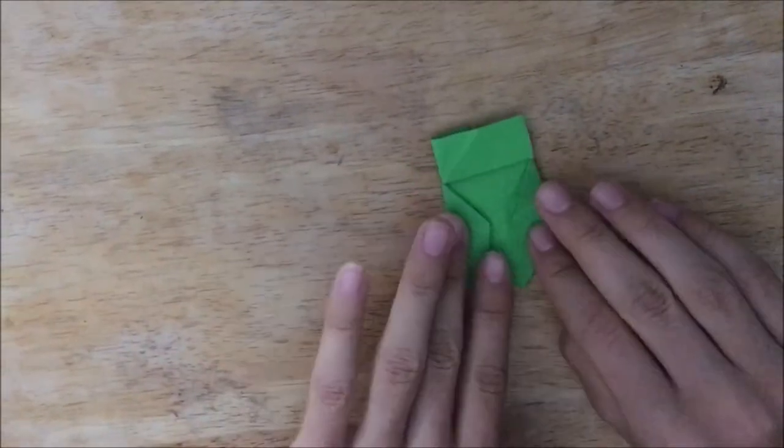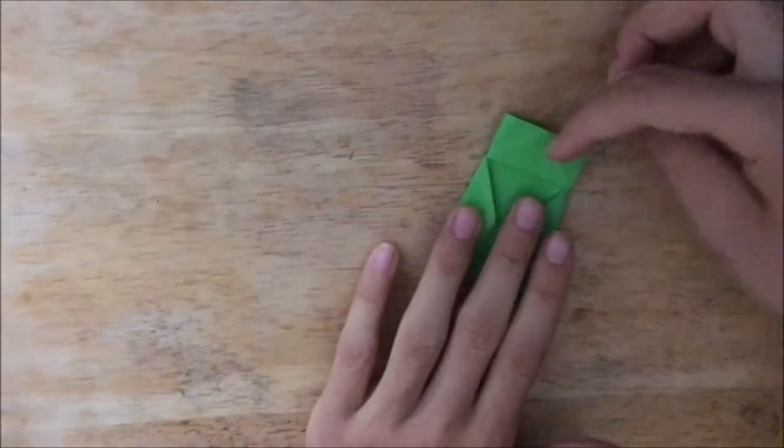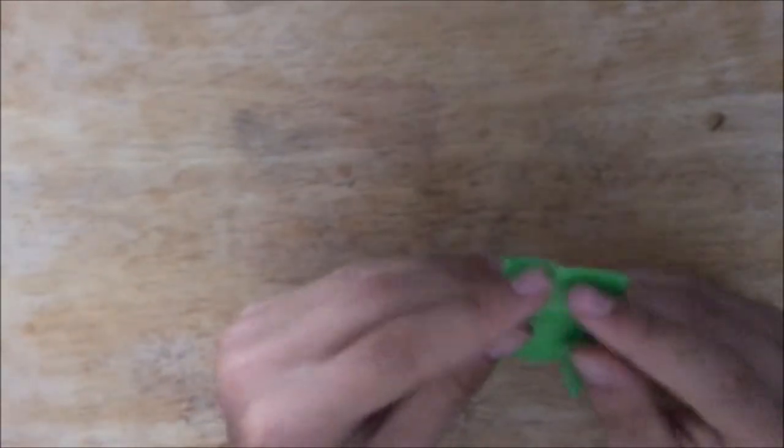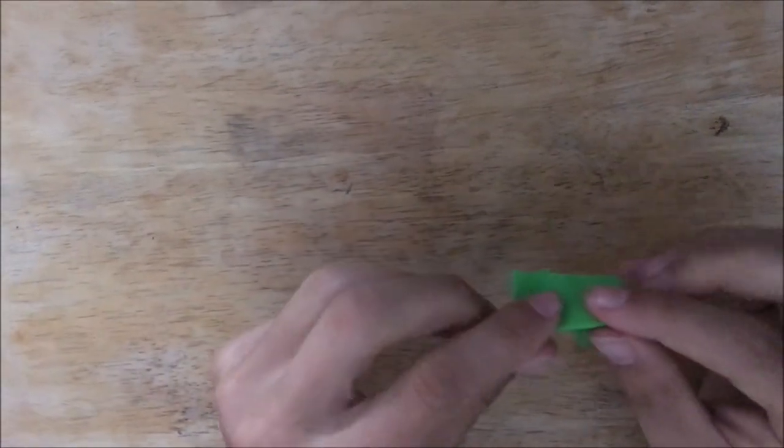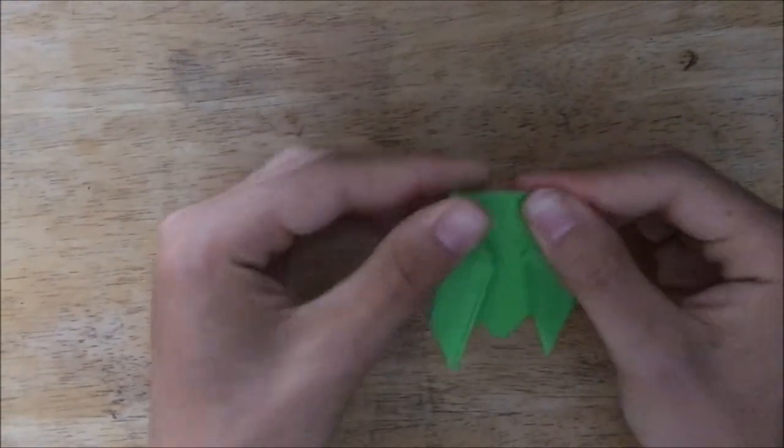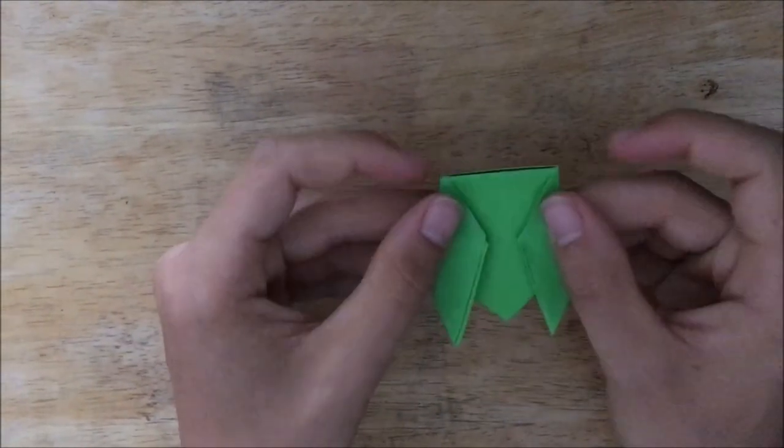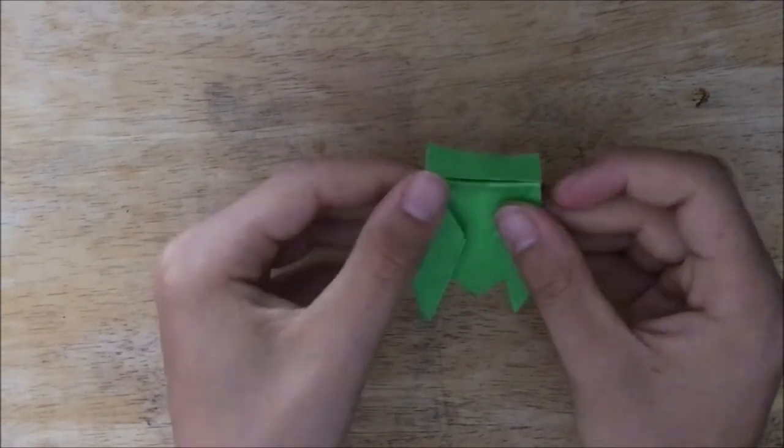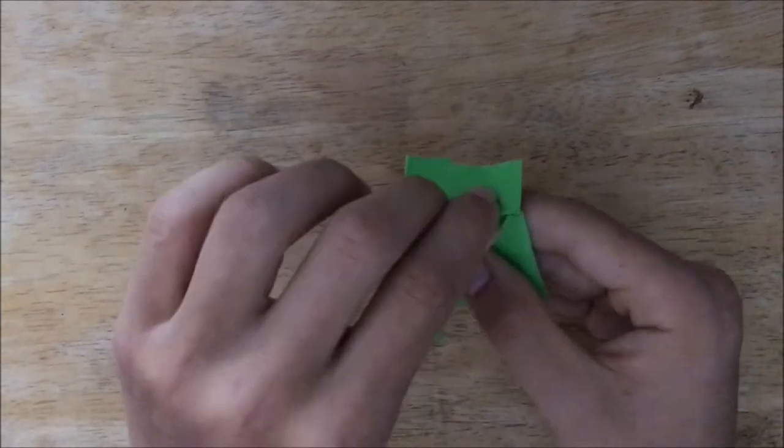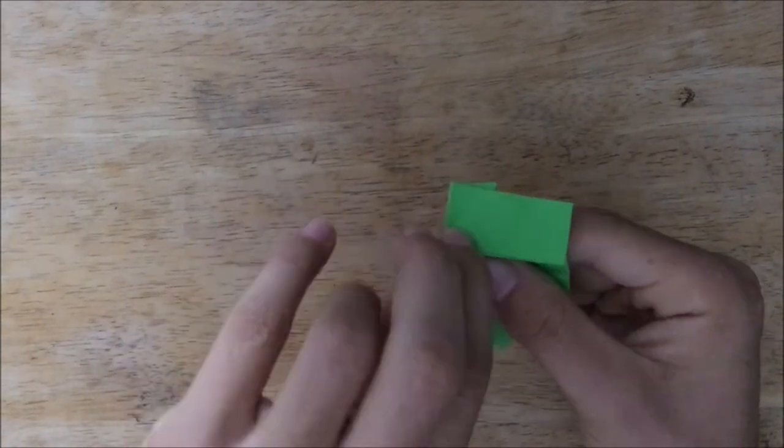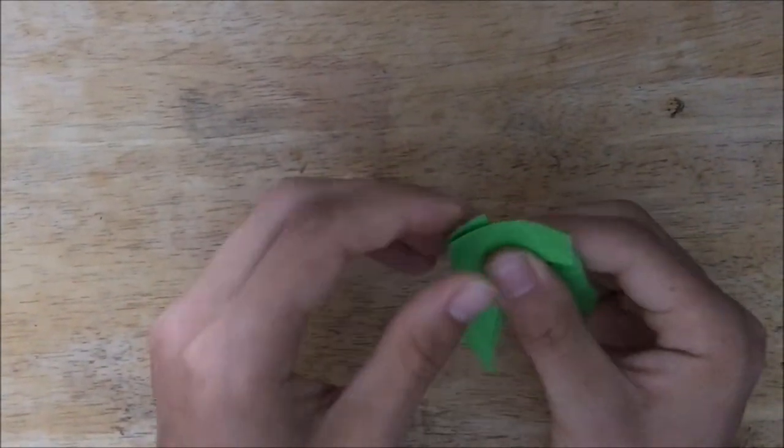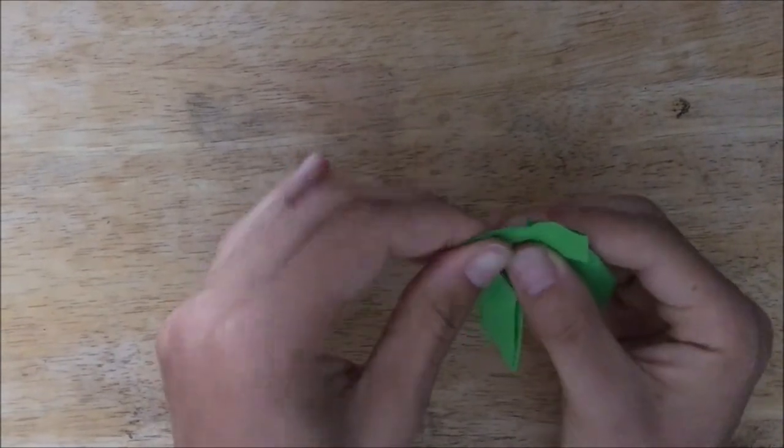Now, you're going to take, this is the head of the cicada. What you want to do with that is fold away from you, fold it down like that. So now it's a headless cicada. And then fold it towards you.